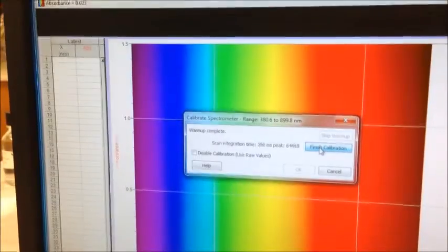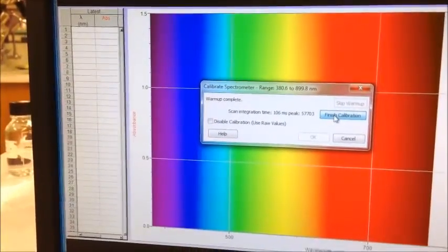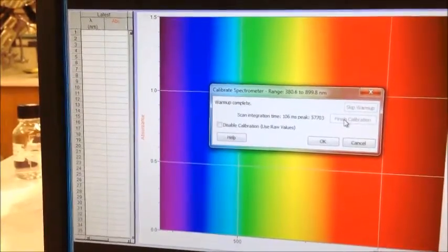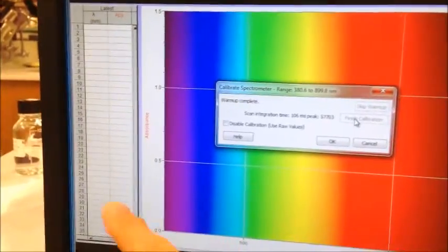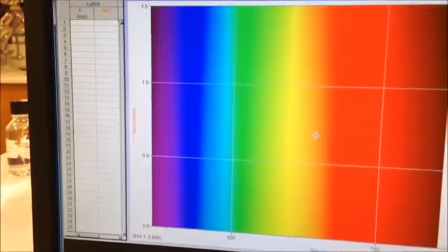So what is the computer actually doing when it's finishing the calibration? What it's doing is scanning and finding out how much light is absorbed at every wavelength across the spectrum, and then it stores that information into its memory.